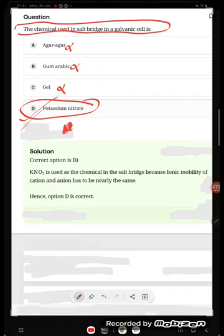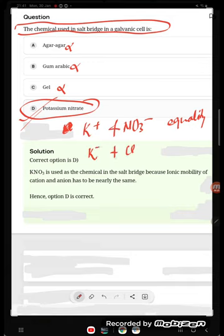If you talk about the potassium ion K+ and NO3- ion, they are equal, and their mobility is also equal. Similarly, KCl - this can also work, K+ and Cl- also can.